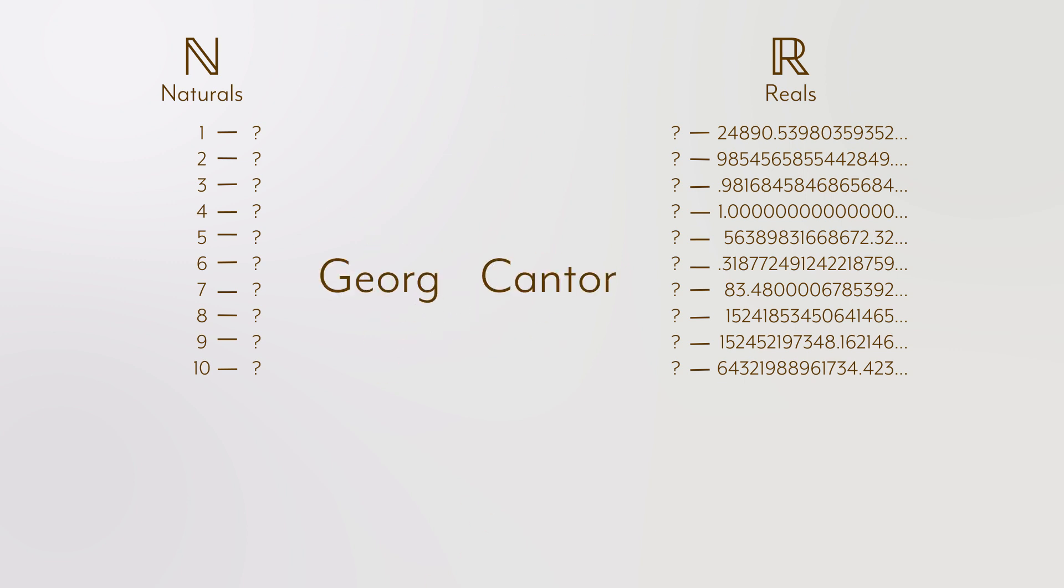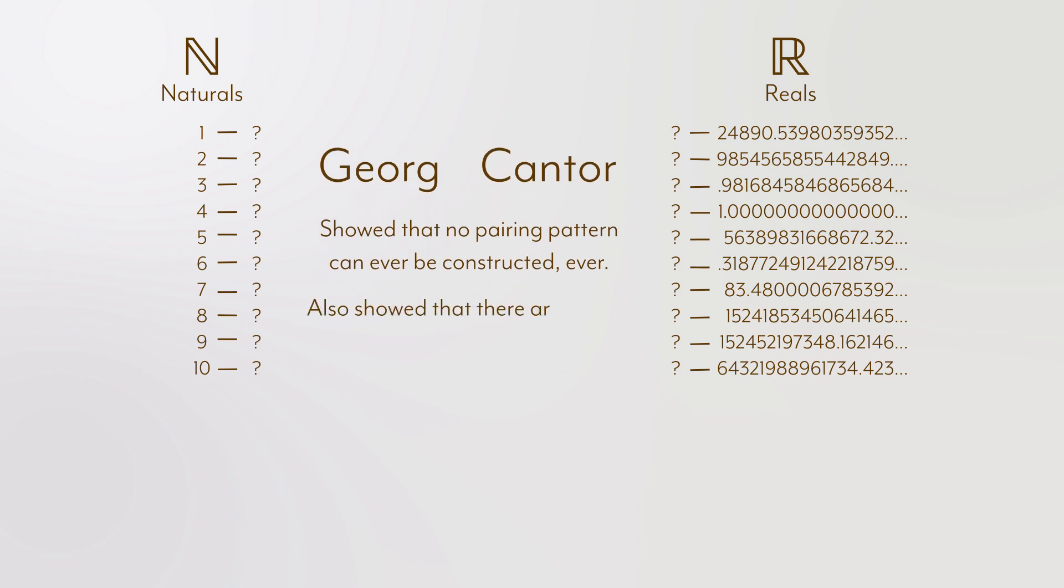He proposed a novel strategy. Show that there is a problem with every proposed pairing pattern. And thus, no pairing pattern will ever work. Further, he can show that there are always unpaired elements from the reals that can't ever be paired with anything from the naturals. Thus, there are always fewer naturals. Here's how he did it.